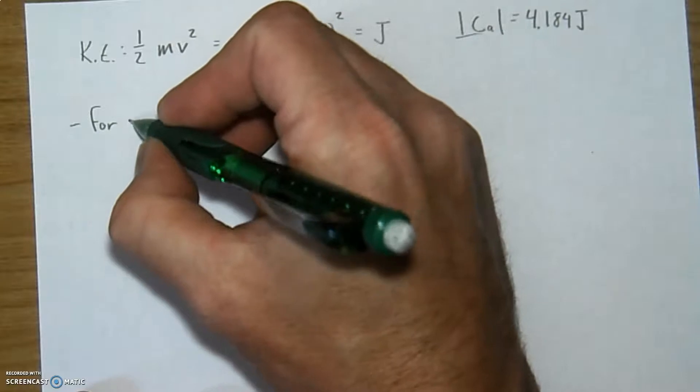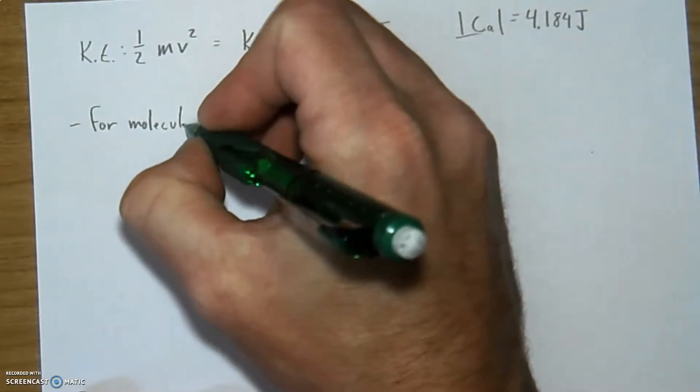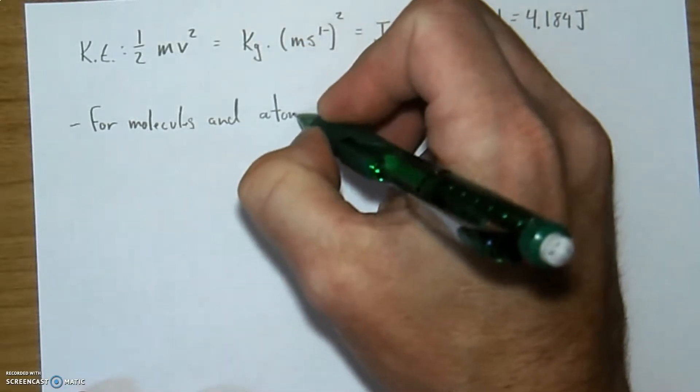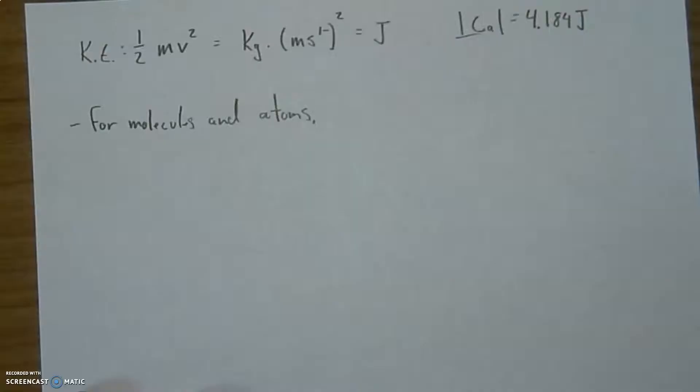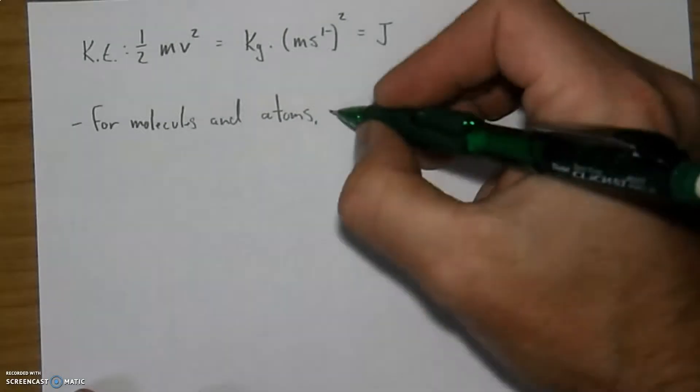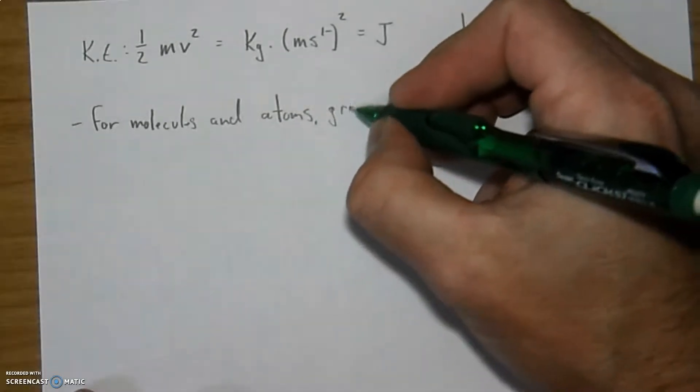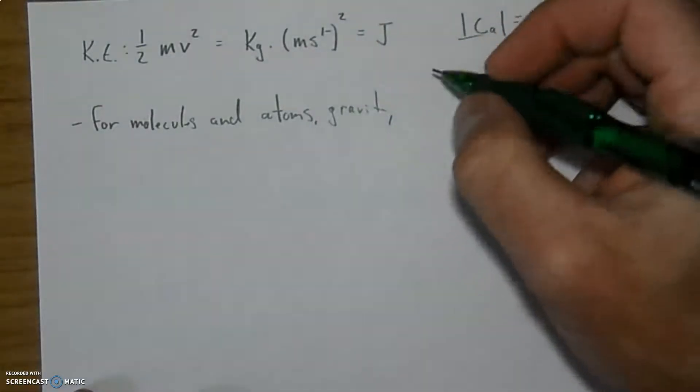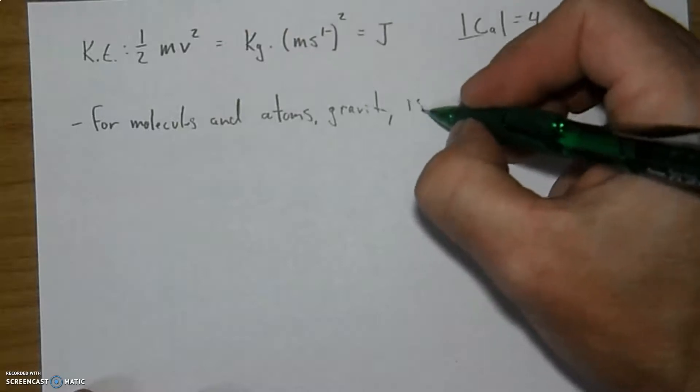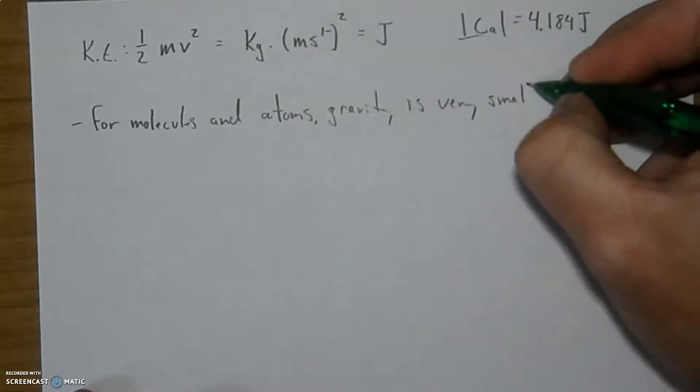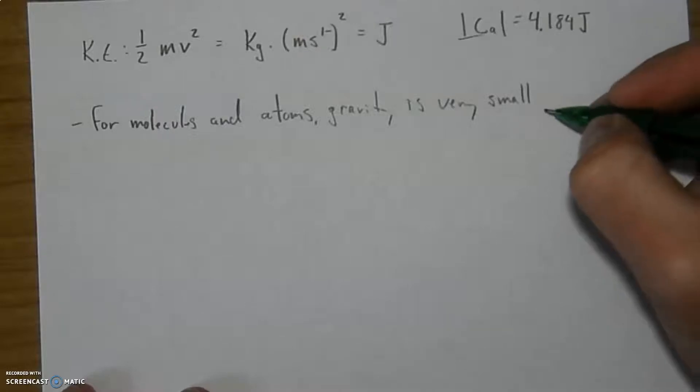For molecules and atoms, as far as how these things are attracted to each other or anything that acts upon them, everything does have gravity. But because molecules and atoms are really, really, really small, gravity, as I mentioned it here, is very small. So it means there's not much attraction between these based upon gravity, although there is some, but it's very small.